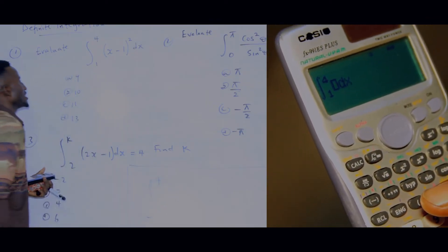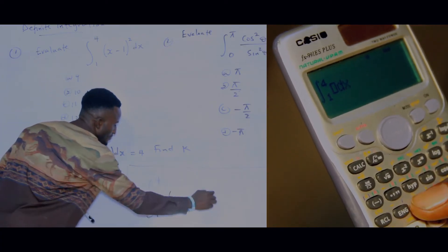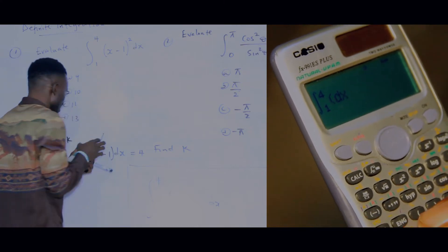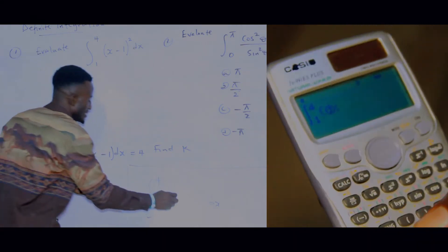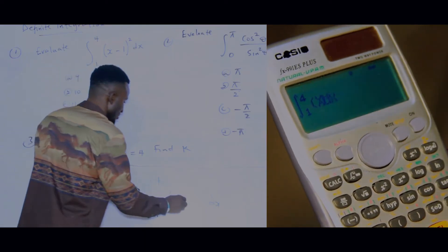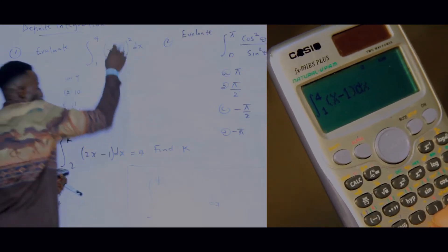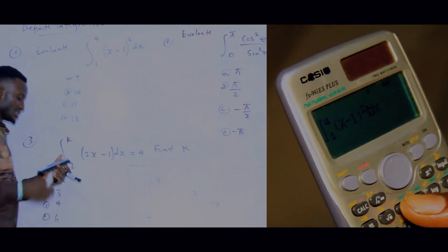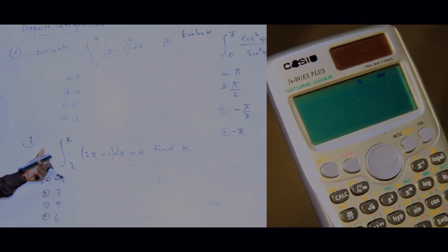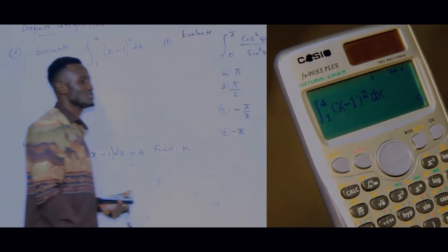Then come to the middle — the input area. Open the bracket, then press Alpha X (that is Alpha, close bracket), then minus 1, close the bracket, then press square as required by the question. Press equals to solve, and you observe that the answer is equal to 9.